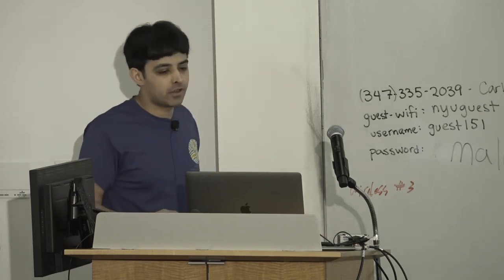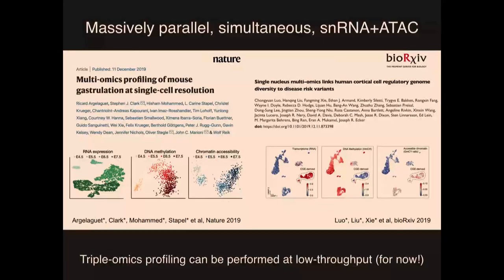It's not necessary to stop at two different omics. Technologies like scGNOME-seq and SNMT-seq actually enable you to measure three different modalities: RNA expression, DNA methylation, and chromatin accessibility. These are not high-throughput approaches — they process cells one at a time — but you can still generate thousands of cells measuring all three modalities simultaneously. I'd really encourage you to read papers from Ollie Stiegel, John Marioni, and Wolf Reich on multiomic profiling of the developing mouse embryo, and from Bing Ren and Joe Ecker on post-mortem samples from the human prefrontal cortex.